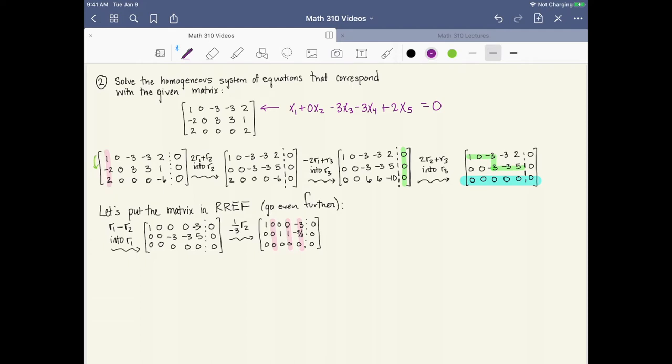The interesting part of this example is going to be when we parameterize the solutions to the system of equations. So let's see what we've produced here. We have an entire row of 0s at the bottom. That's going to affect things greatly.